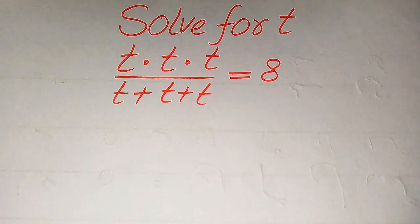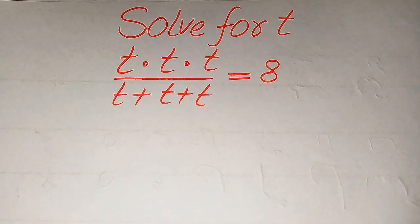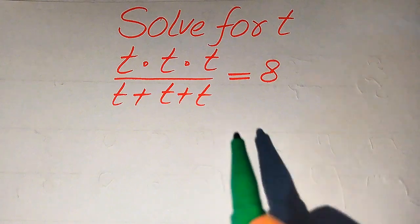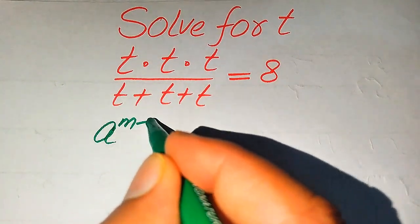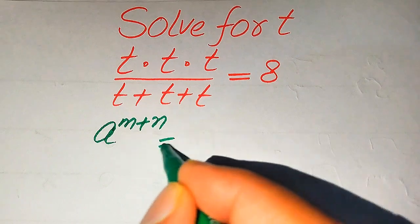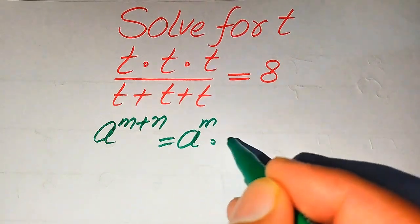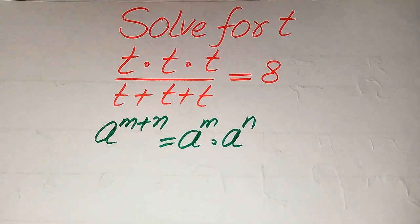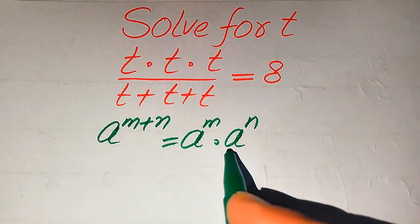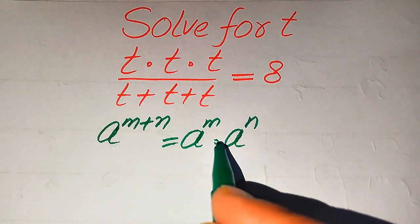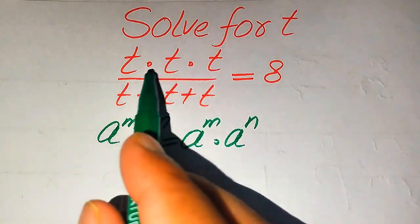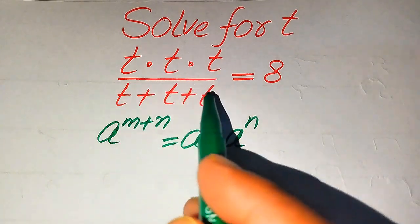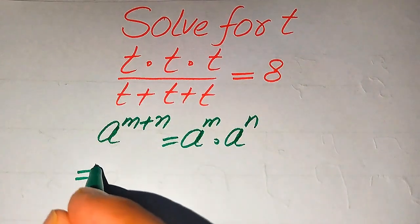The very first thing we are going to do is use the exponential law. You know that if we have a to the power of m plus n, it equals a to the power of m multiplied by a to the power of n. In other words, if the same base terms are multiplied by each other, we add their exponents. The base of these three terms is the same, so we need to add the exponents of all three terms.